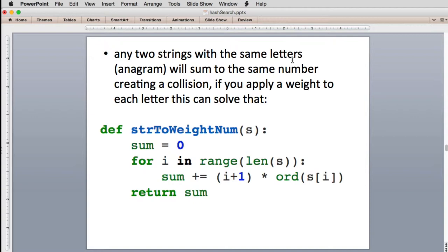If we want to avoid that, we can apply a separate weight to each character. So we rewrote the string to number function. We added the word weight to the name of the function and we do a sum. But here we don't just sum the ordinal of the character. We have an i which is going to go from zero to the length minus one. So we add one to i. So as we go through the loop, this will be one times the ordinal, two times the ordinal.